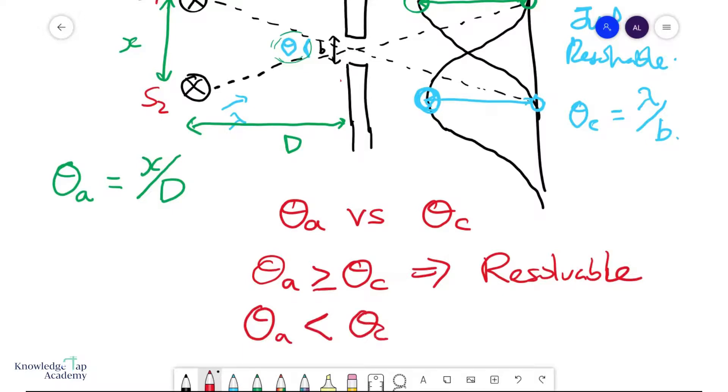And of course, if theta actual is less than this critical angle as determined by Rayleigh, then you may not resolve them and you cannot see them separately.